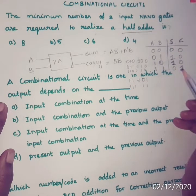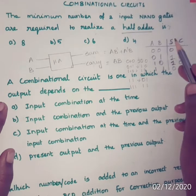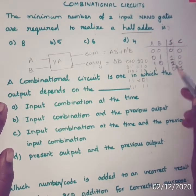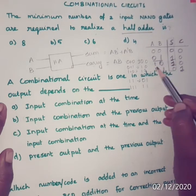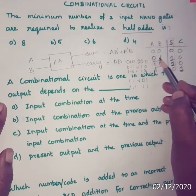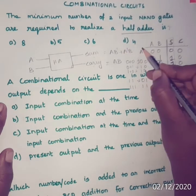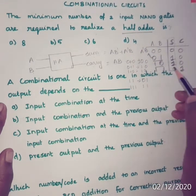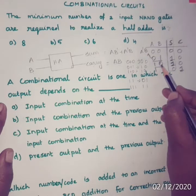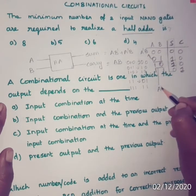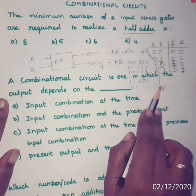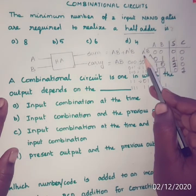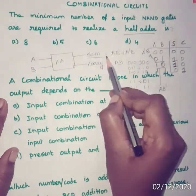Next, we have to write the boolean expression for sum and carry. To write the expression, first look at the sum column. Sum is equal to 1 when A=0, B=1, so the minterm is A̅B. And when A=1, B=0, that is AB̅. Using these two minterms, the sum of product expression for sum is A̅B + AB̅.